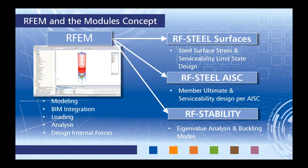Today we'll be working in RF Steel Surfaces, which will provide us with a steel surface stress and serviceability limit state design for our 2D surface shell elements comprising our silo structure. We'll also utilize RF Steel AISC, providing member ultimate and serviceability design per the AISC standard. Lastly, we'll get into RF Stability, which provides an eigenvalue analysis of the structure and the different buckling modes under the applied load cases.